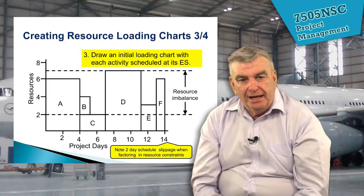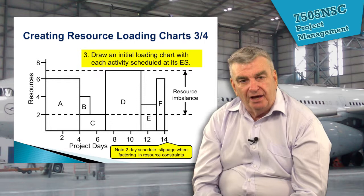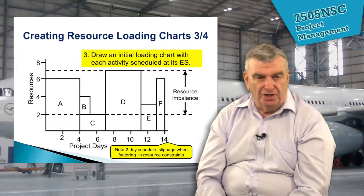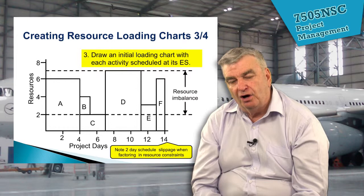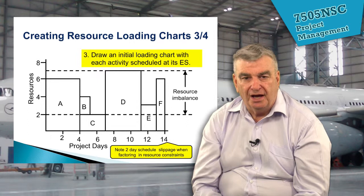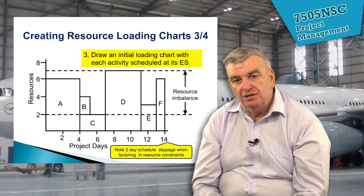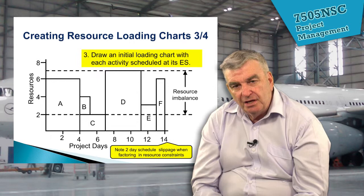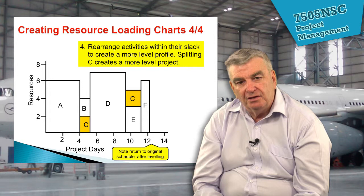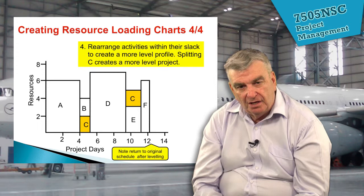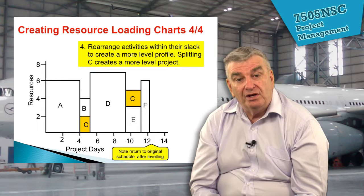Here's an example of a resource loading chart showing project time in days and resources in units. Activities A through F are represented across the timeline of the project. We can see straight away that we've got peaks — for example in A — then dropping to a trough in B and C, then a peak in D, then another trough, then a peak again at F. During the lecture we can actually smooth that out by rescheduling activities so that, according to their predecessors, the differences between peaks and troughs are reduced.